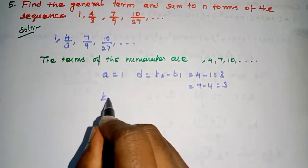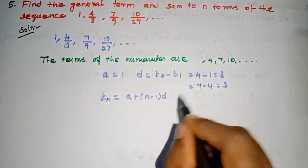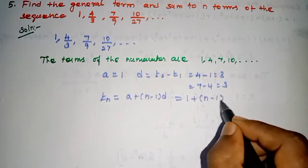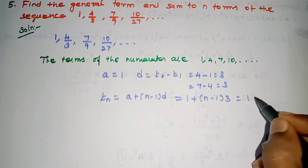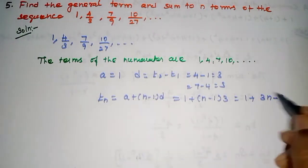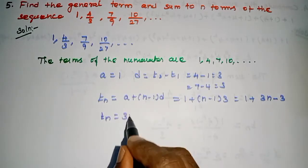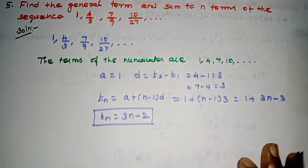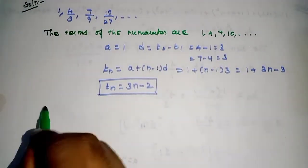For the numerator, Tn = a + (n-1)d. Here a = 1 and common difference d = 3. So Tn = 1 + 3(n-1) = 1 + 3n - 3 = 3n - 2. Therefore, the nth term of the numerator is 3n - 2.